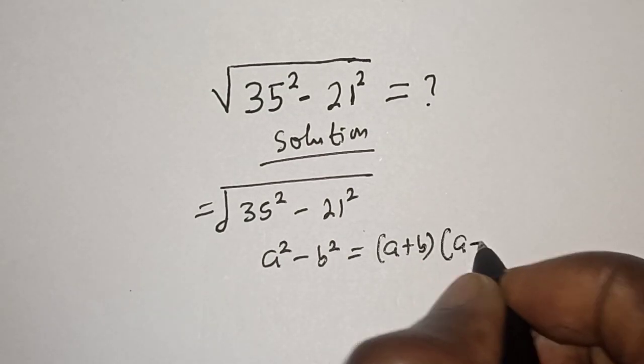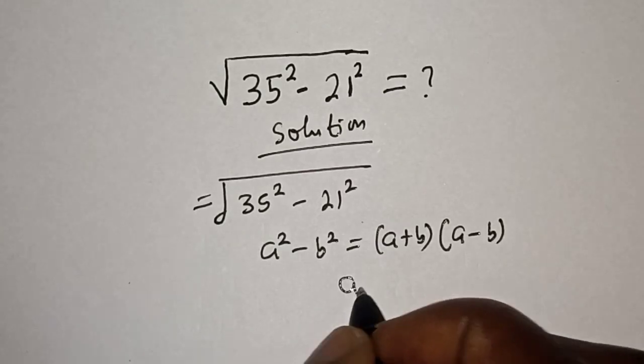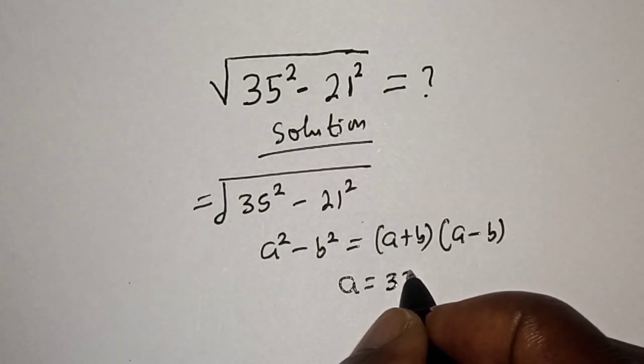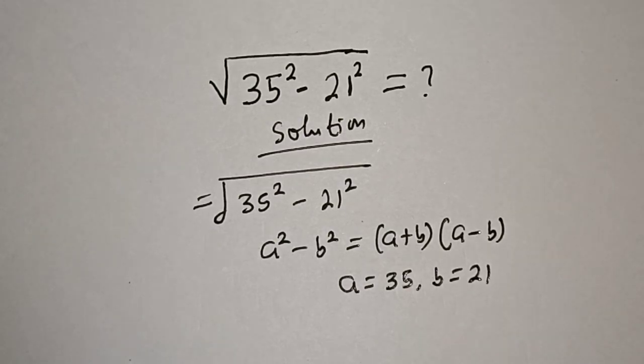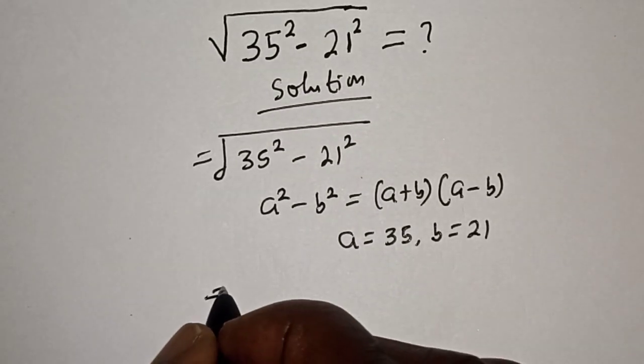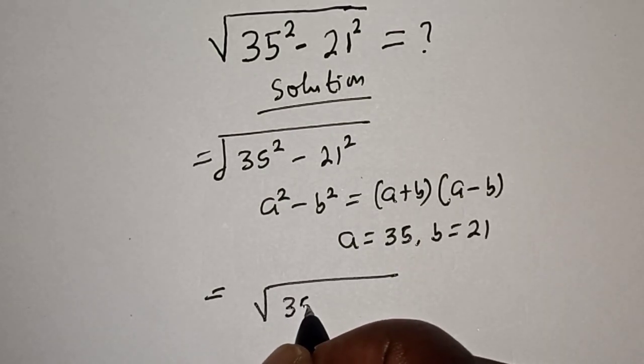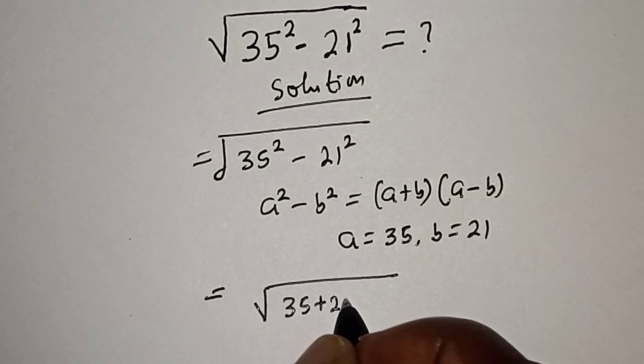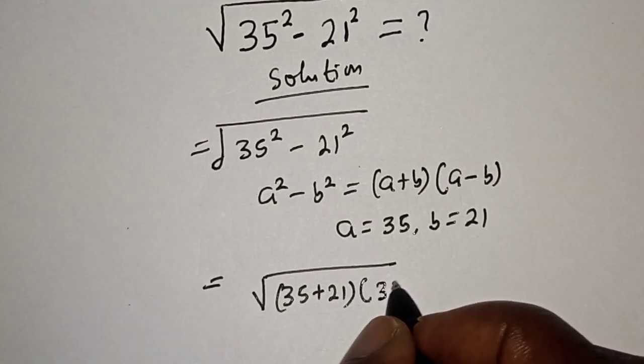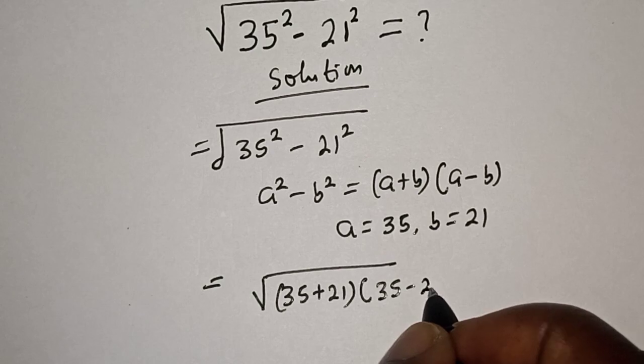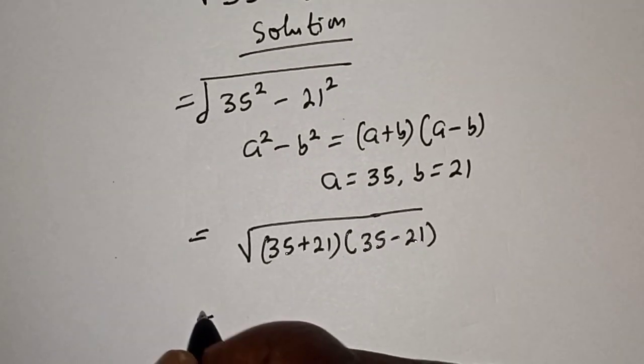And from this question, a is equal to 35, b is equal to 21. Then this is equal to square root of (35 plus 21) multiplied by (35 minus 21).